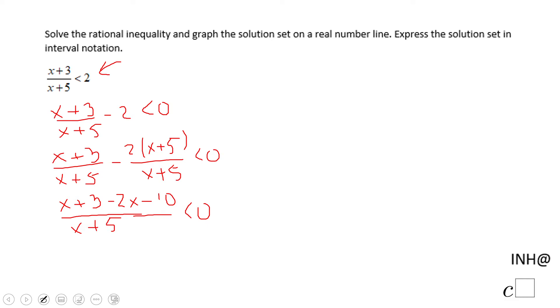And the final form here is going to be negative x, because x minus 2x is negative x, and positive three minus ten is minus seven, over x + 5, less than zero.